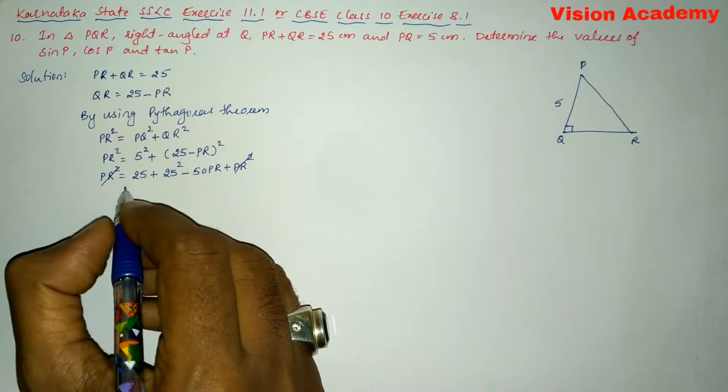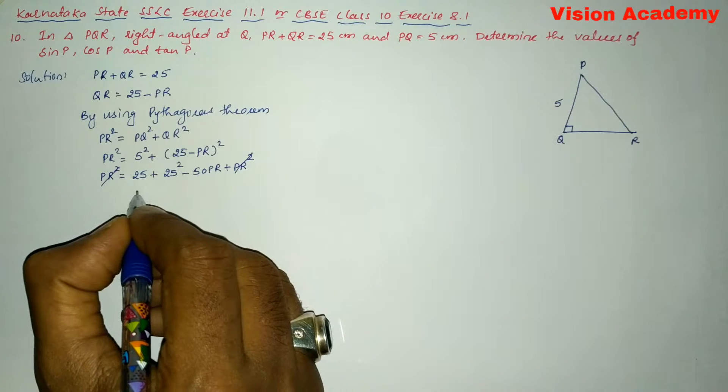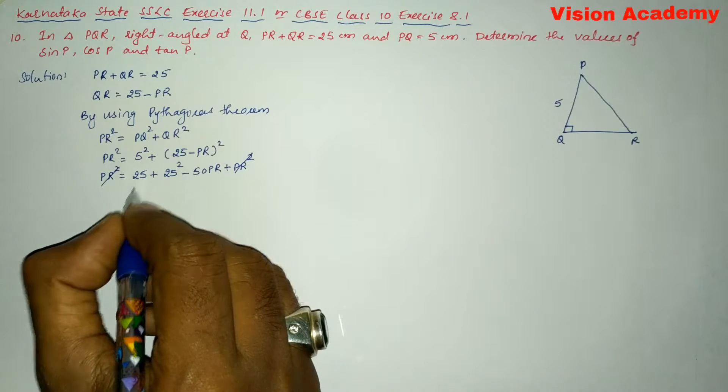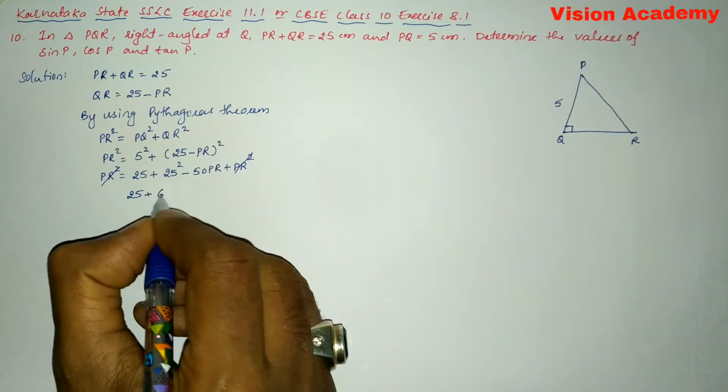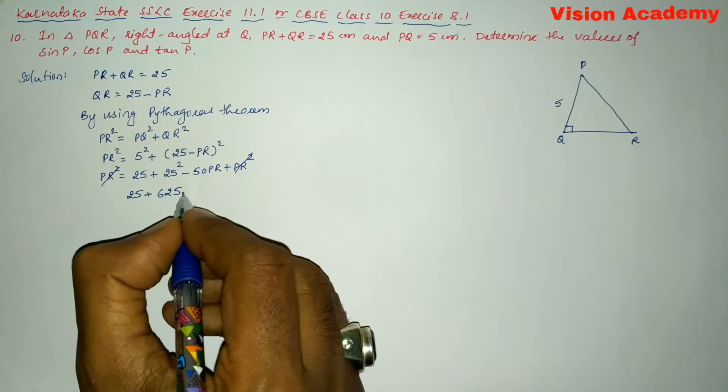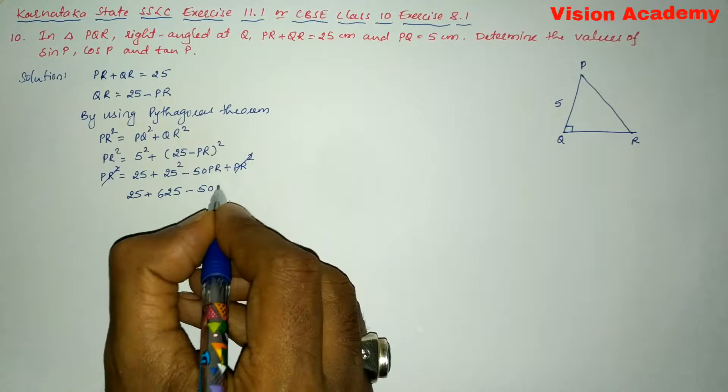Now we will further simplify: here we are going to get 25 plus 25 square is 625 minus 50 PR.